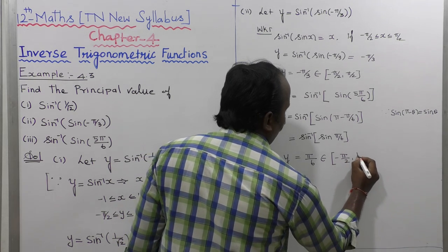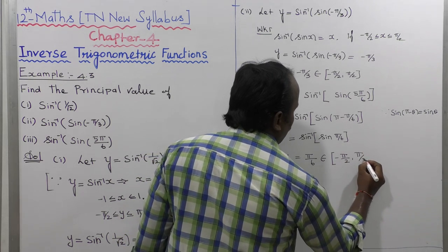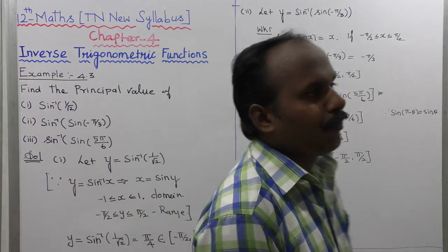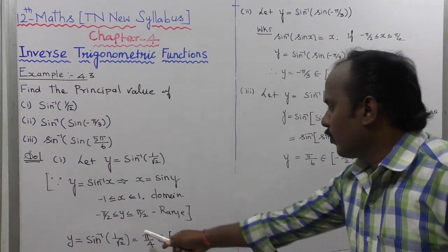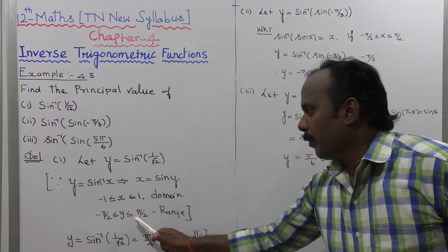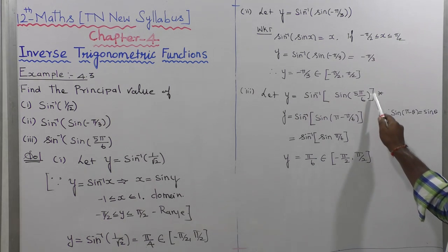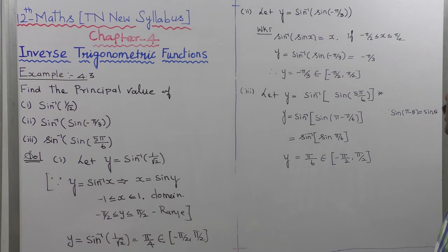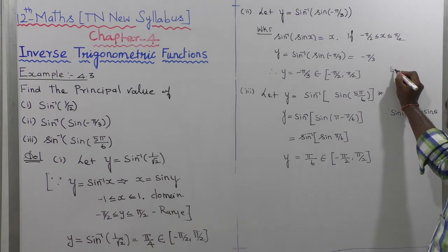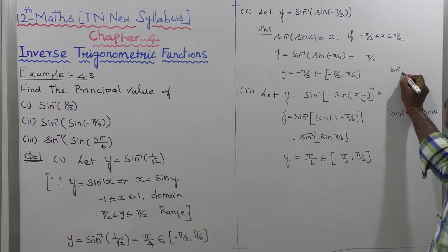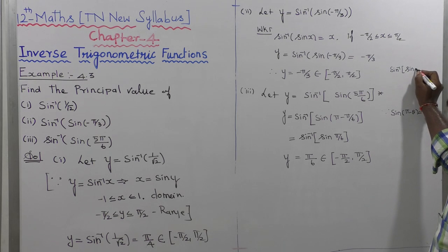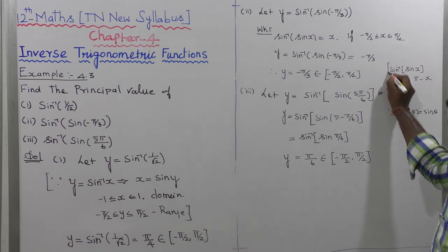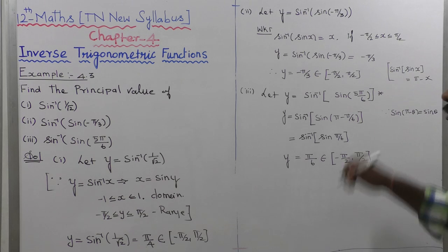Therefore y equals pi by 6, which belongs to minus pi by 2 to plus pi by 2. The key concept to understand here is the range value: the range is minus pi by 2 to plus pi by 2. When the angle is outside this range, we use the formula sin inverse of sin(x) equals pi minus x to bring it back into range.